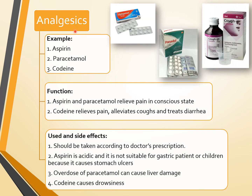The first class is analgesics. Common examples include Euphamol and Panadol. Specific examples are aspirin, paracetamol, and codeine for cough syrup. Aspirin and paracetamol relieve pain in a conscious state. Codeine relieves pain, alleviates cough, and treats diarrhea.